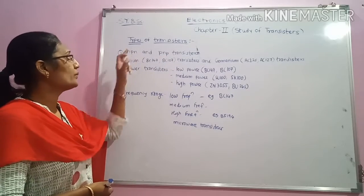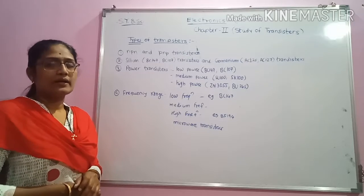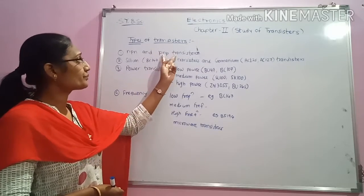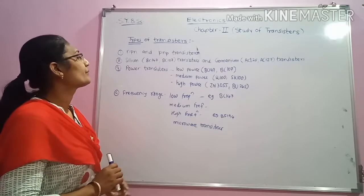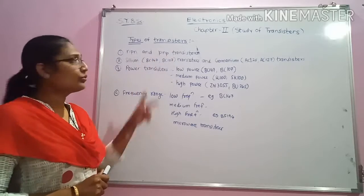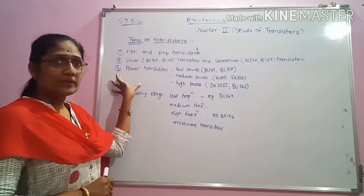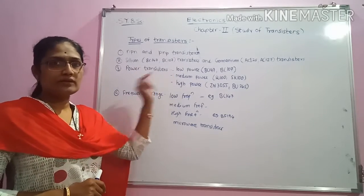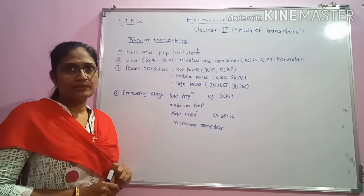Therefore, in the circuit there will be IE, that is emitter current, IB, base current, and IC, collector current. In both the transistors, we are forward biasing the emitter-base junction and reverse biasing is applied to the base-collector junction. These are the NPN and PNP transistors.